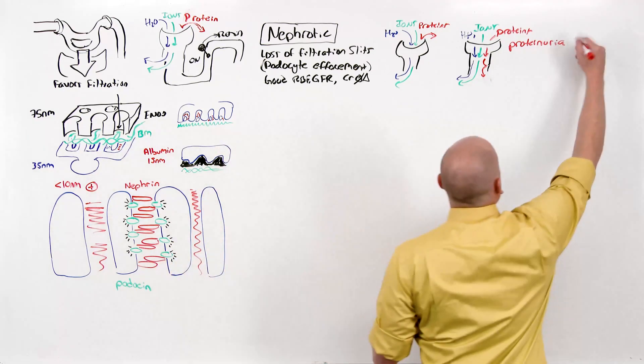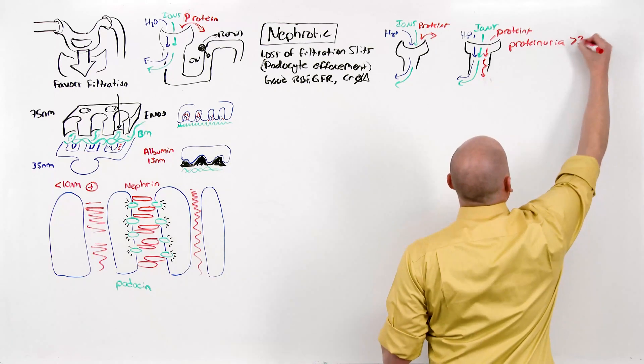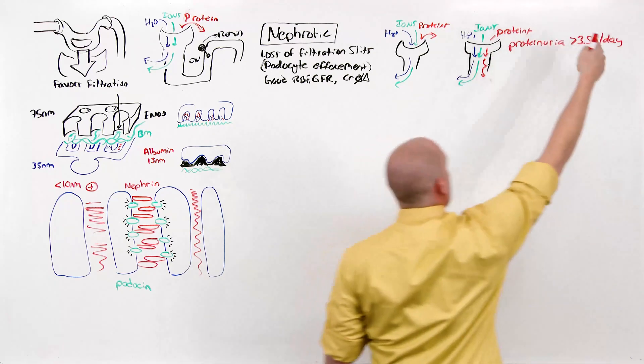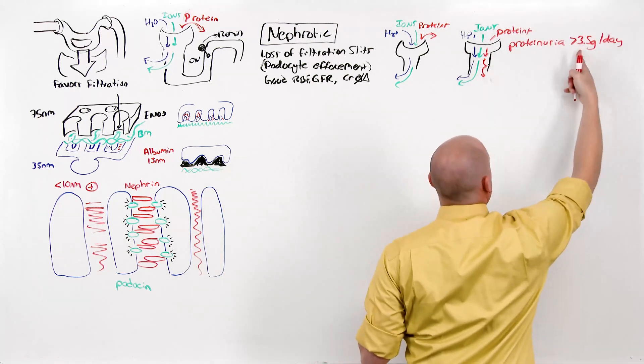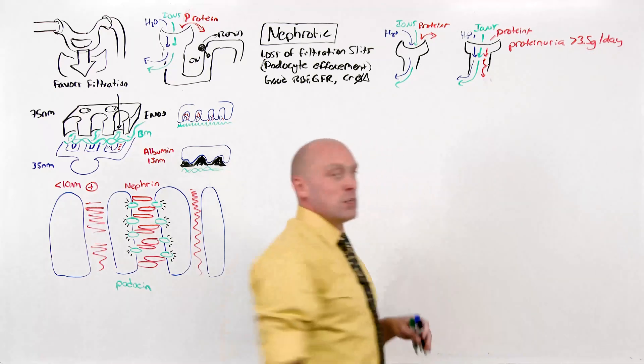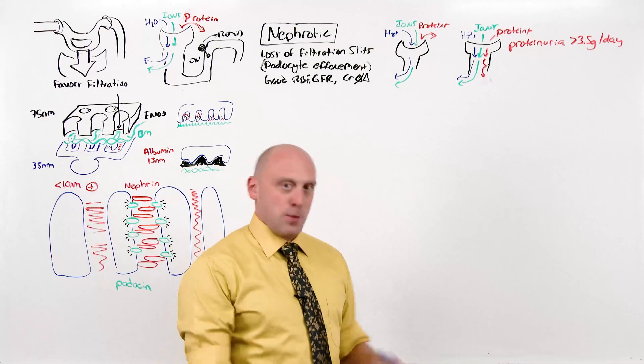Nephrotic range proteinuria is greater than 3.5 grams per day. It's time per day. Because they're going to urinate the same amount of volume and lose a little bit of protein as they do, there's going to be a lot of protein over the day. You'll see why I'm making such a big deal about this when we talk about nephritic syndrome.